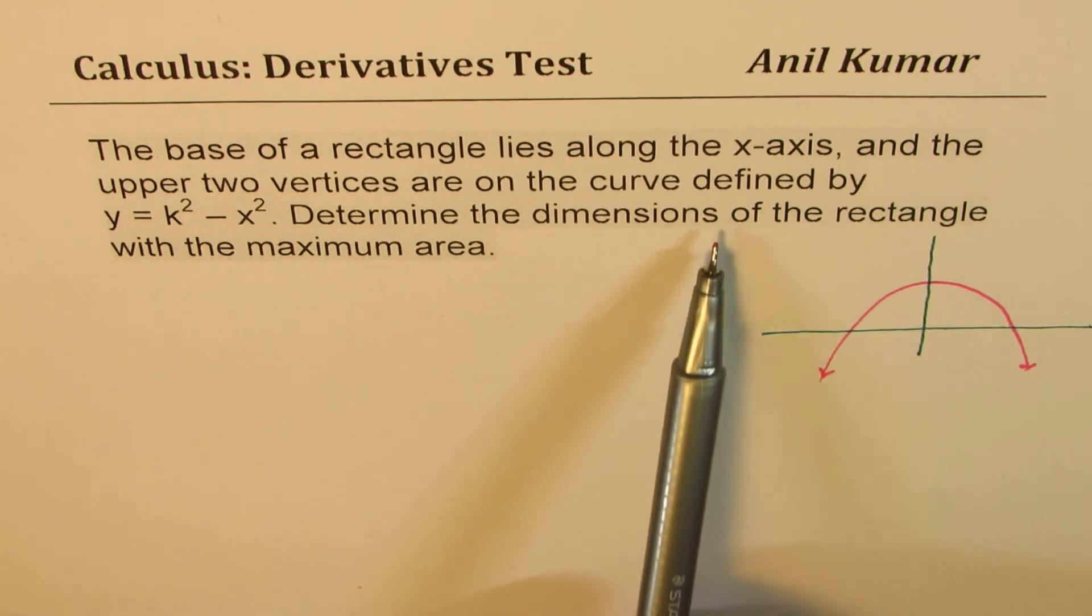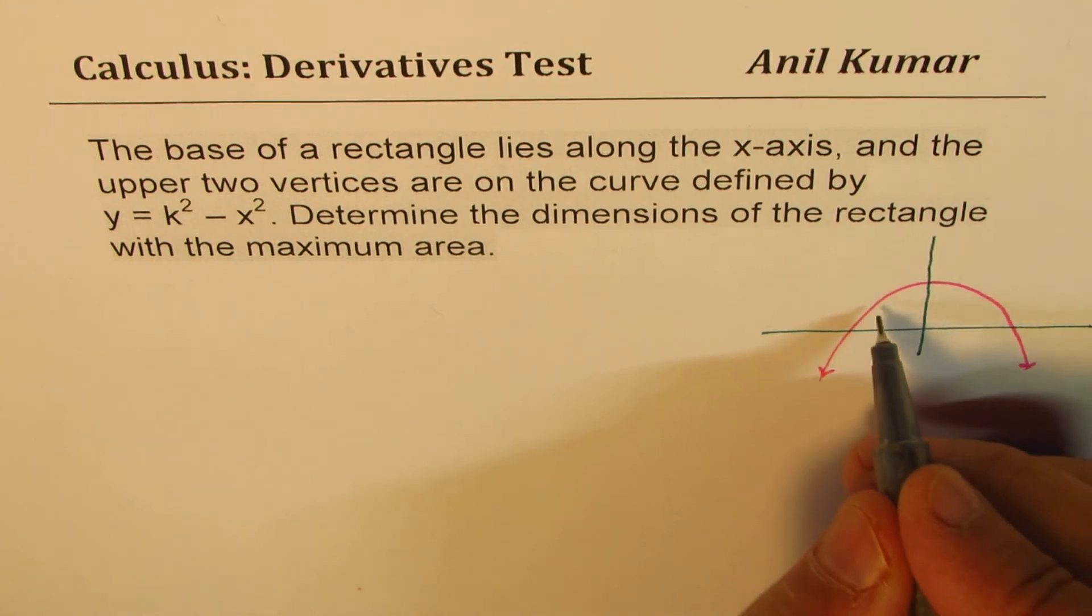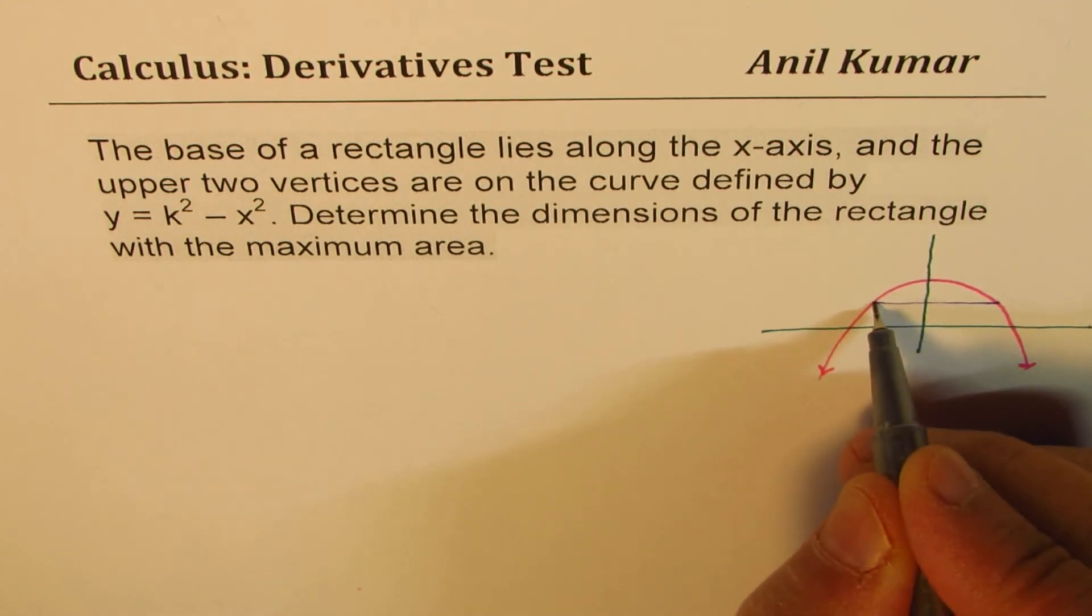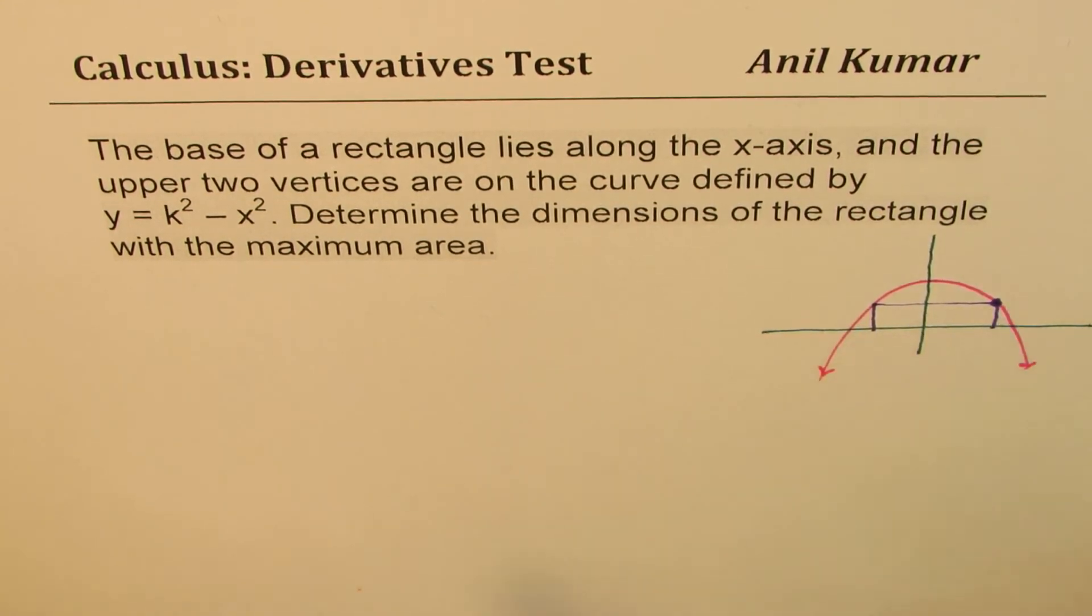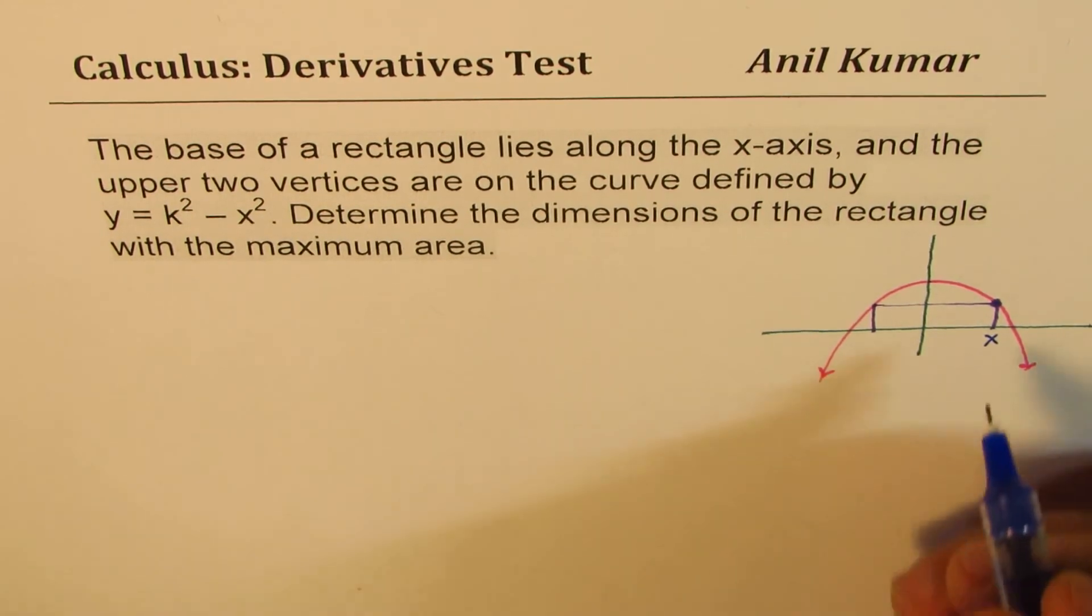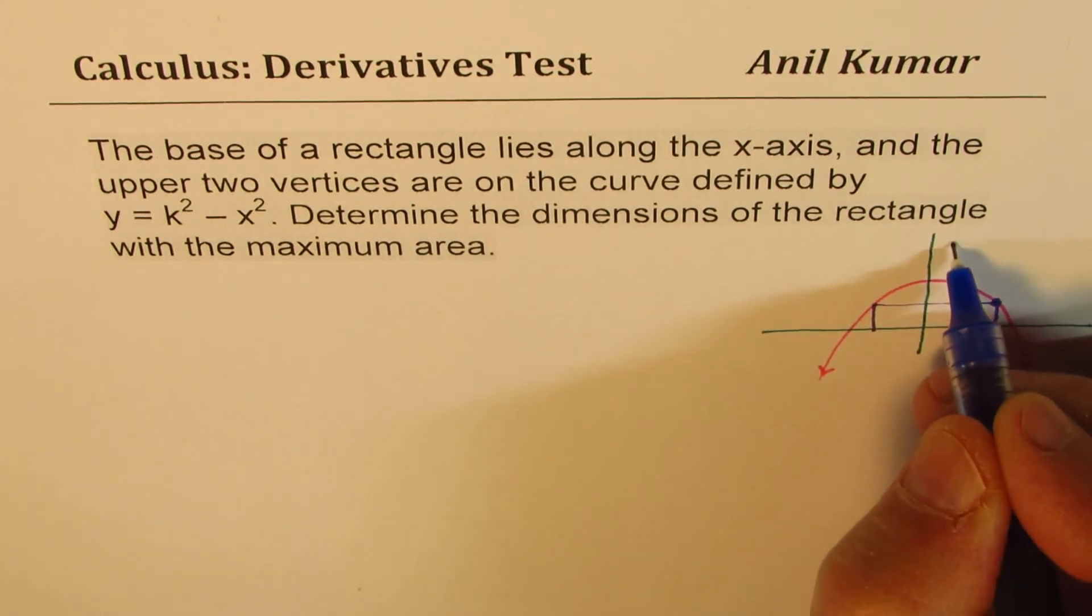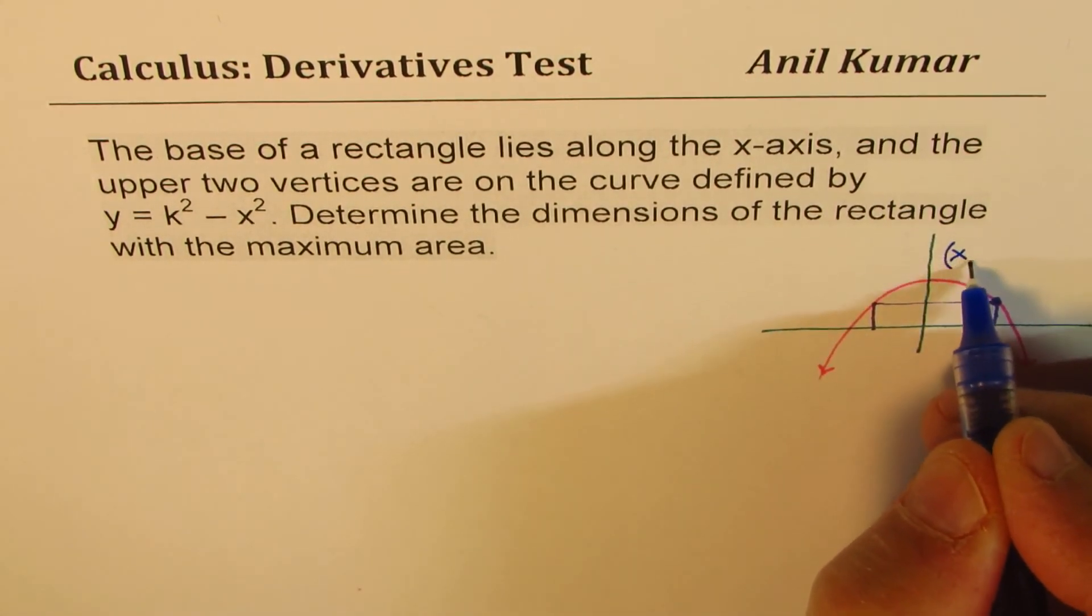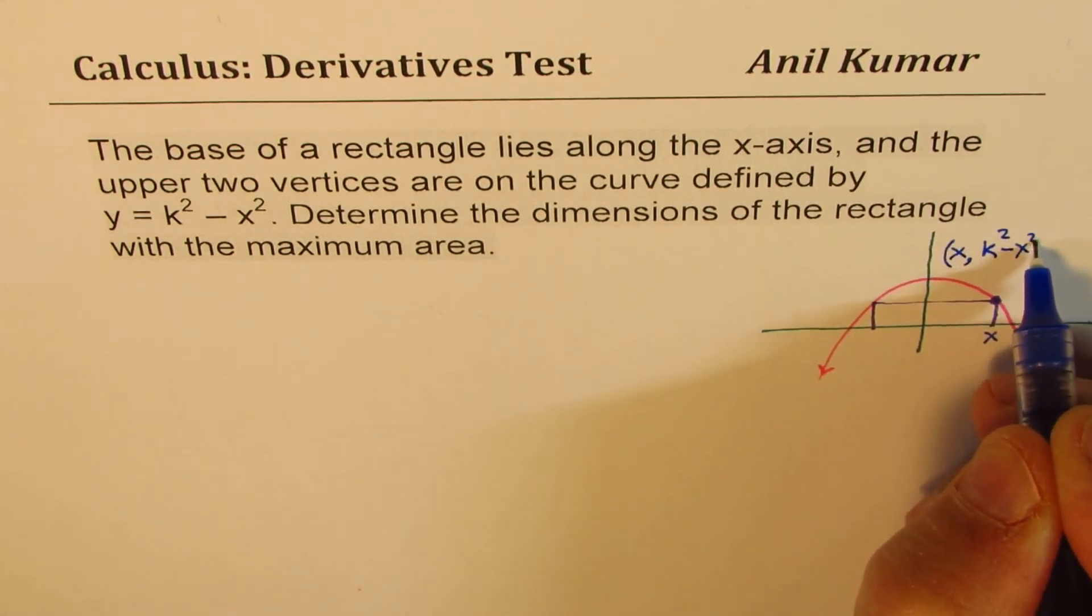We want to maximize the area inscribed in this, in the upper half with vertices on the parabola. So let us say this is the rectangle we are interested in. Now, let's take general coordinate of any point here. What could it be? So if I choose general value of x, in that case, the y value is going to be k squared minus x squared. So I could write down a point here as x and the y value is k squared minus x squared. That makes sense?